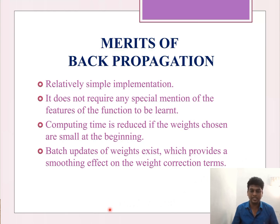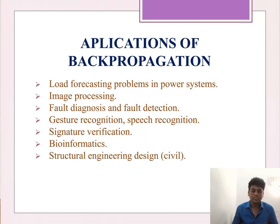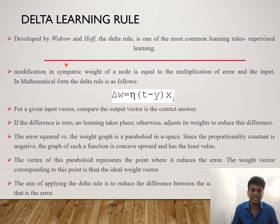Main merits are: implementation is easy, less computational time, and weight updation has a smooth effect. Some demerits are that it is an inefficient method, output sometimes may be non-numeric, and even though we use the gradient function to calculate loss, it's not guaranteed to find the global minimum of the error function. Back propagation has various applications in signature verification, image processing, structural engineering design in civil engineering, bioinformatics, and various other domains.